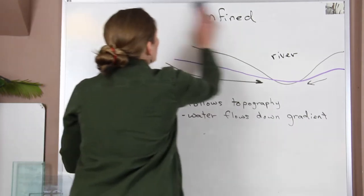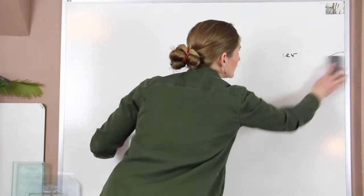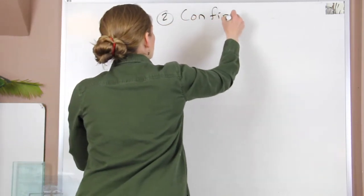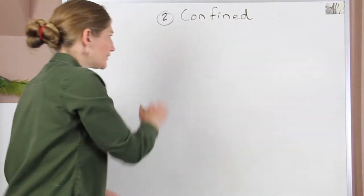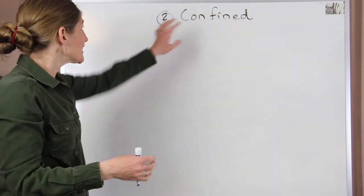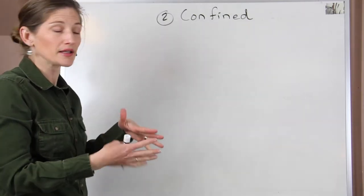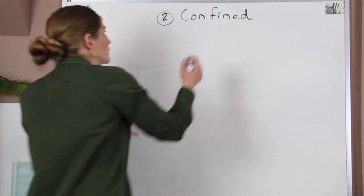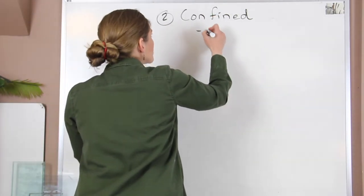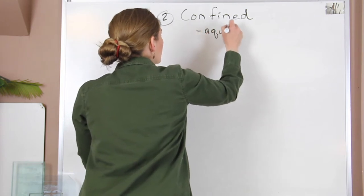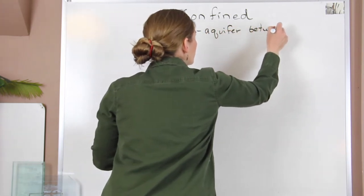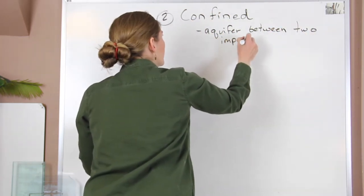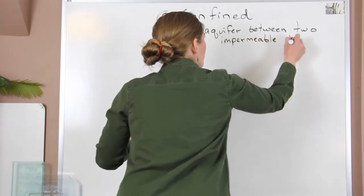All right, our second type of aquifer is going to be the confined aquifer. So kind of following through with that, it should make sense that in this case there's something that's constraining or confining the location of that aquifer. We really see this between two impermeable layers—so it's an aquifer between two impermeable layers.